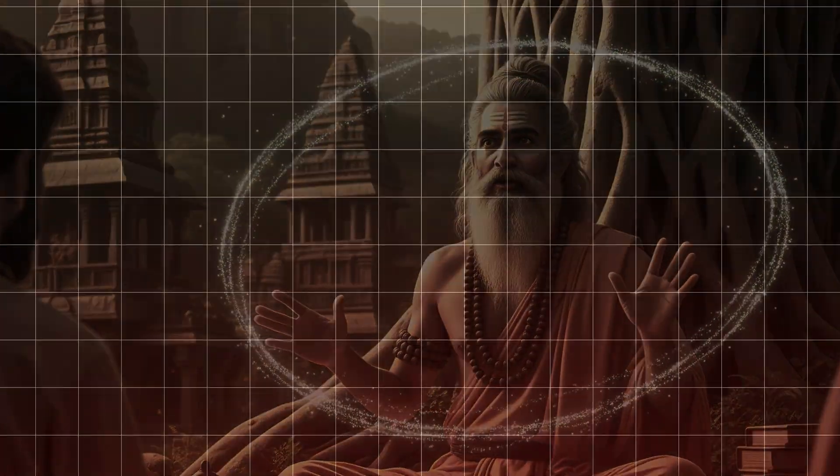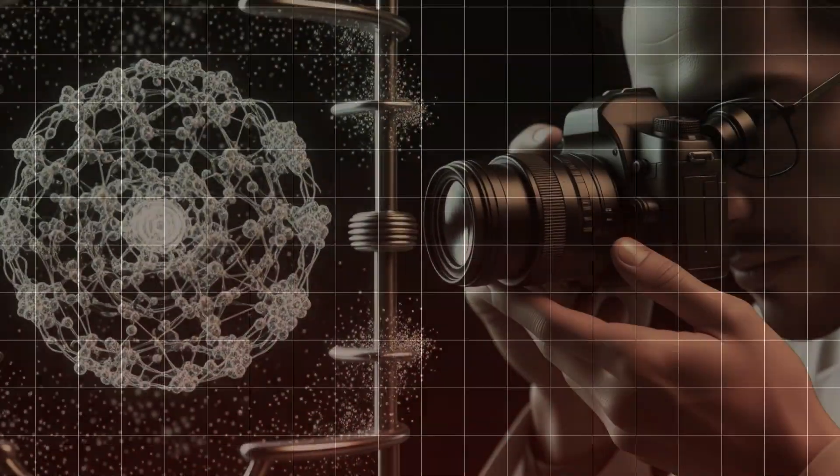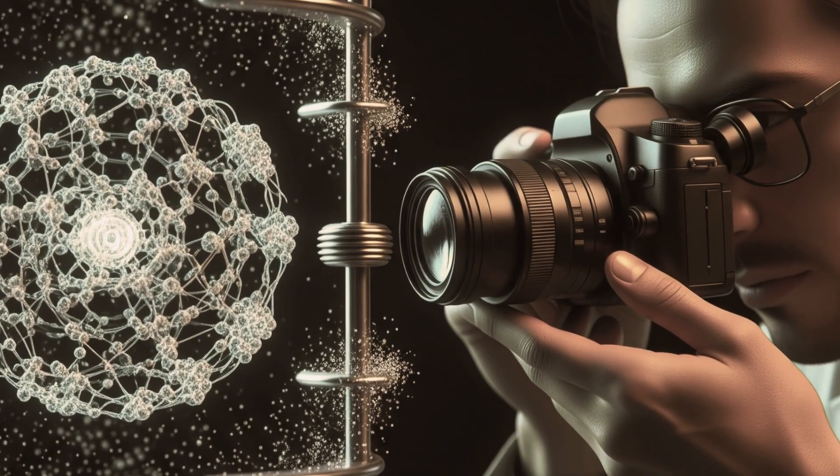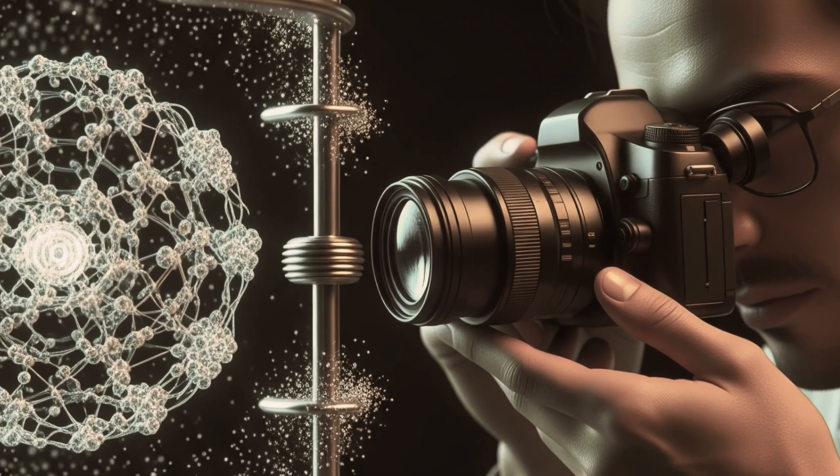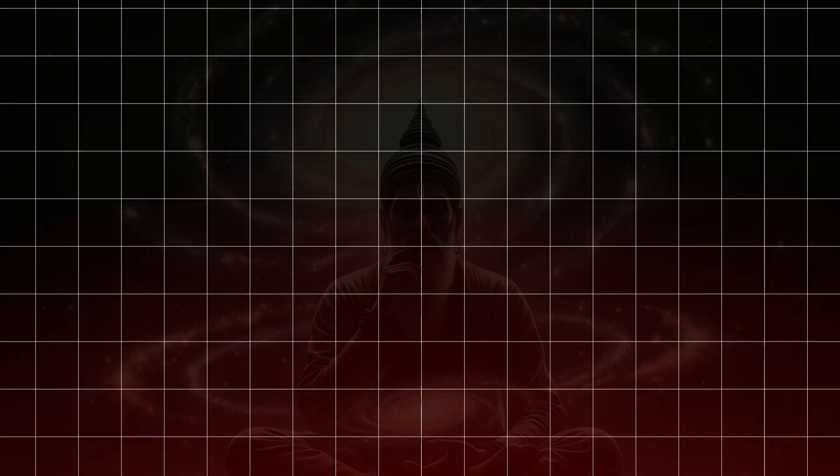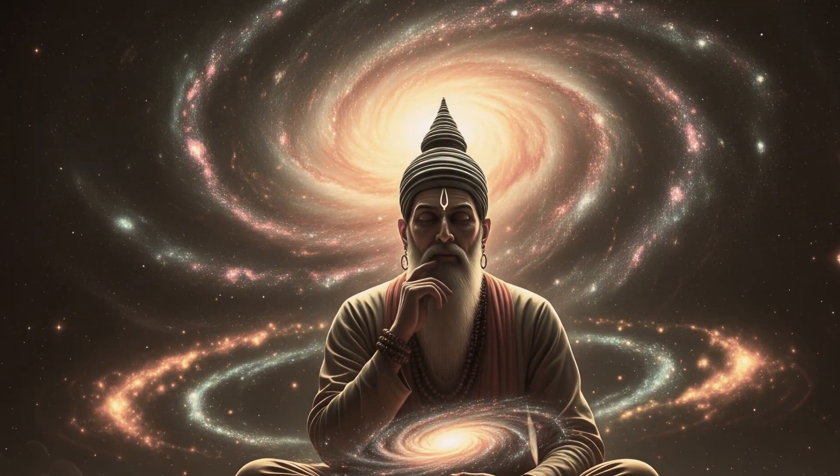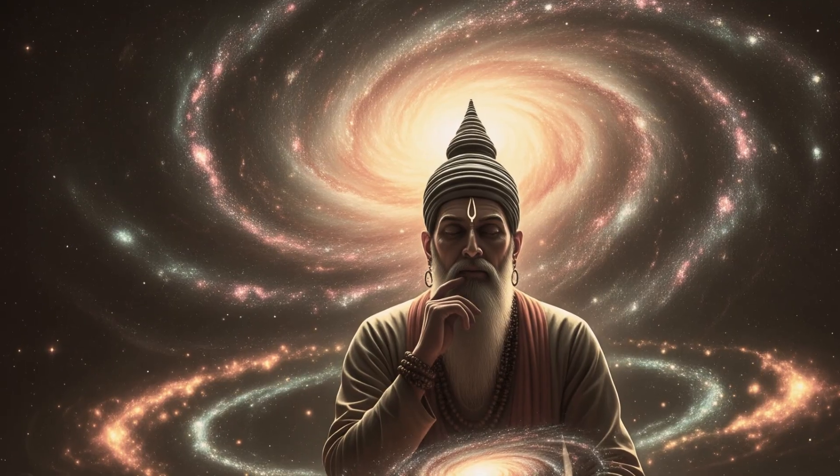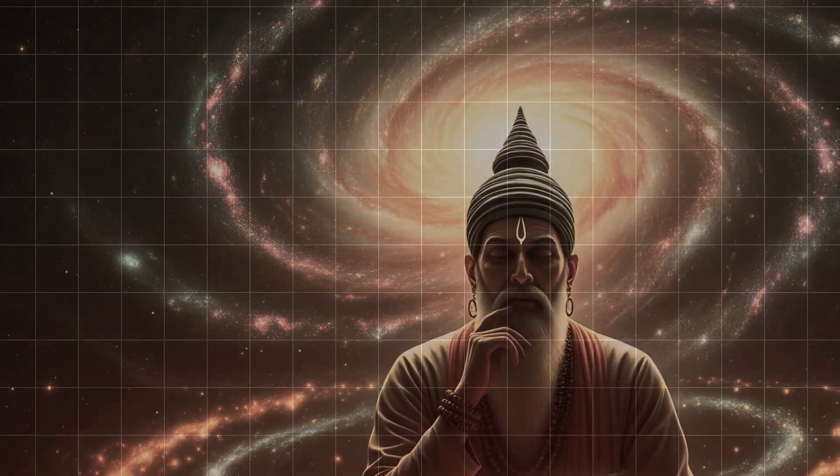Let's look at some mind-blowing examples. Number 1: Observer Effect. Quantum physics says that the observer affects the observed. Particles behave differently when watched. The Vedas say, Drashta Bhava, the observer is not separate from the observed. In Advaita Vedanta, it's clear. The seer and the seen are one.